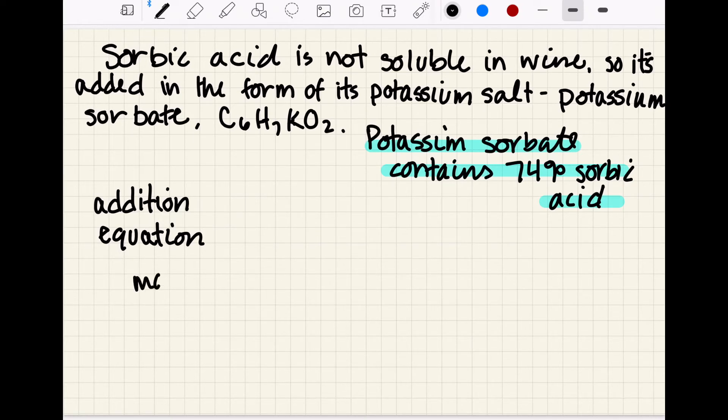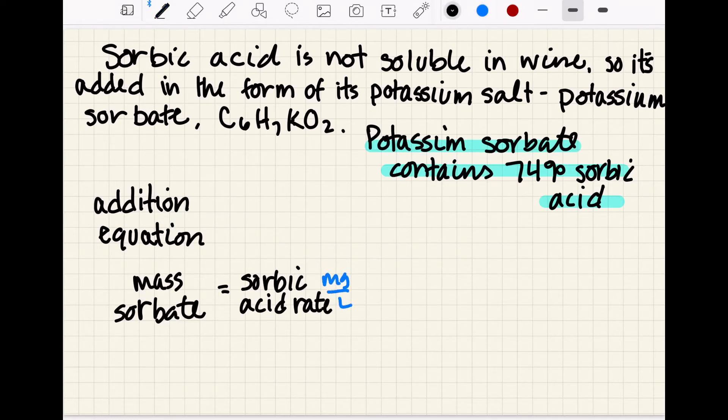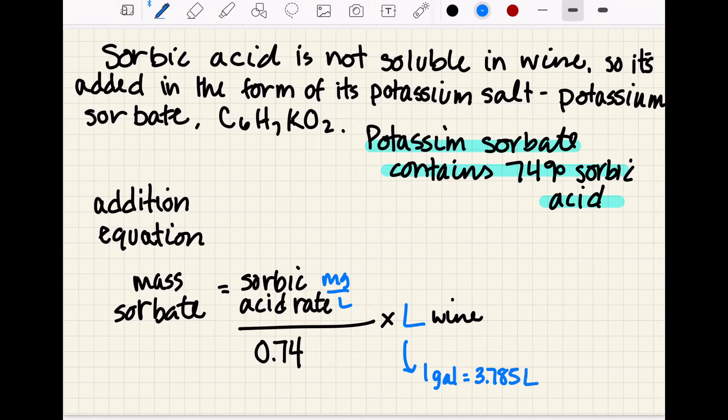Alright, so we're going to have our mass of sorbate is what we want to figure out. So we're going to need our sorbic acid rate and that's going to be in milligrams per liter, and then to account for the fact that there's 74% sorbic acid in potassium sorbate, we're going to divide our rate by 0.74. We'll multiply by our liters of wine, and we'll remember here that one gallon is equal to 3.785 liters, and then we have a unit conversion of milligrams to grams, and then that when we're able to cross out units, our mass of sorbate will be in grams.